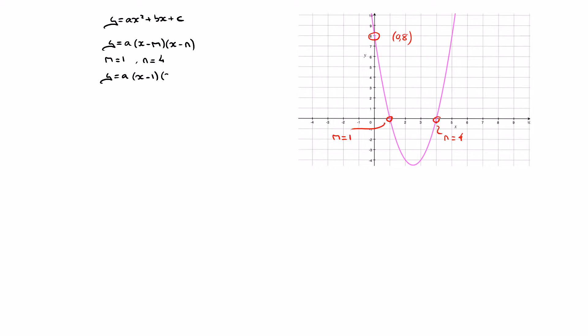Replacing these two values in our equation, we find y equals a times x minus one times x minus four. Now we need to find the value of a, and to do this we'll use the y-intercept, which has coordinates zero, eight.